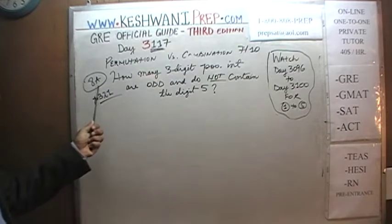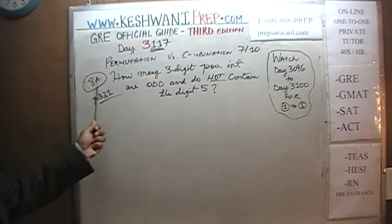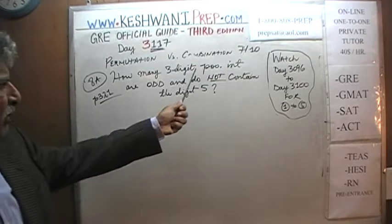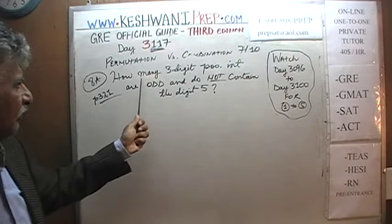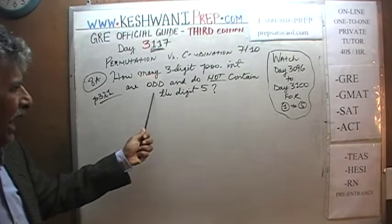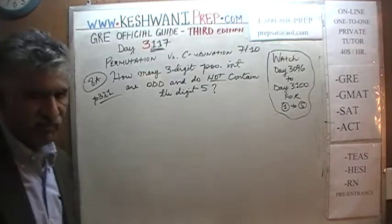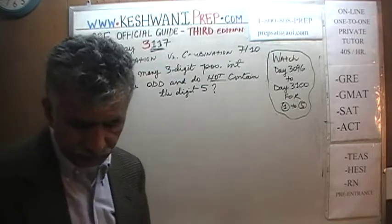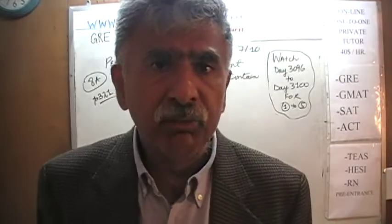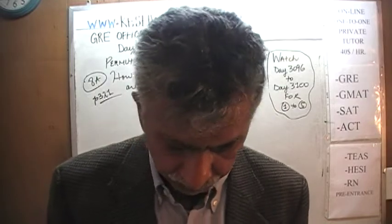We are calling it 8A because we are going to do a few more parts. It says: how many three-digit positive integers are odd and do not contain the digit 5? Make sure the book is in front of you. Read the problem yourself.